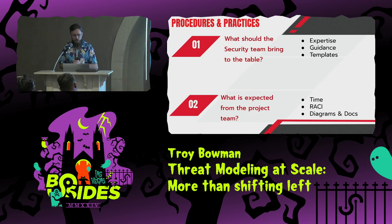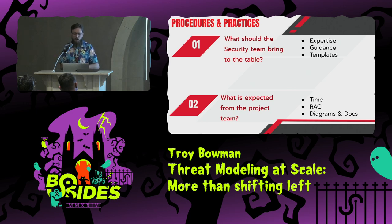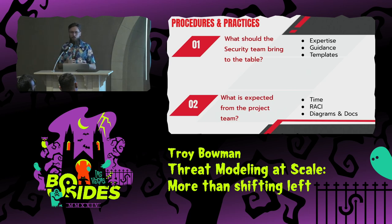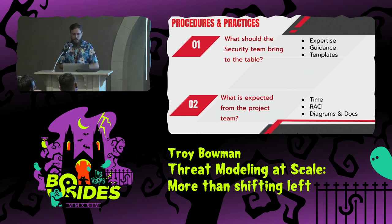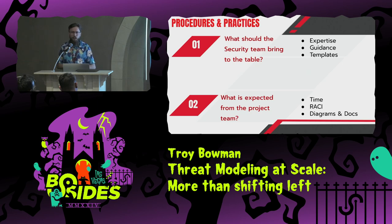Procedures and practices: two main questions when building a threat modeling process at an organization. First, what should the security team bring to the table? Expertise — their knowledge of security. Guidance — knowing what is secure is one thing, but being able to guide project teams to the best option that works for both security and the business is where guidance becomes extremely valuable. And templates — the threat model is a product of the security team. You want to own the template, own the document, and control how it's delivered and how it looks.